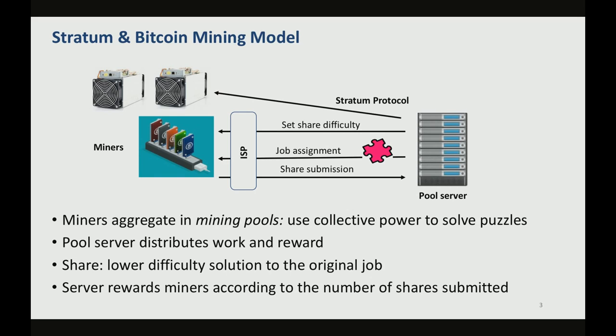We are depicting in this figure the minimal set of packages that any protocol would need to exchange. We need to exchange a set-share-difficulty packet, we also need to be able to assign jobs, and finally we also need to be able to submit shares. The most important problem with this protocol is that everything is done in clear text, and this is what we're going to be exploiting in the following attacks.